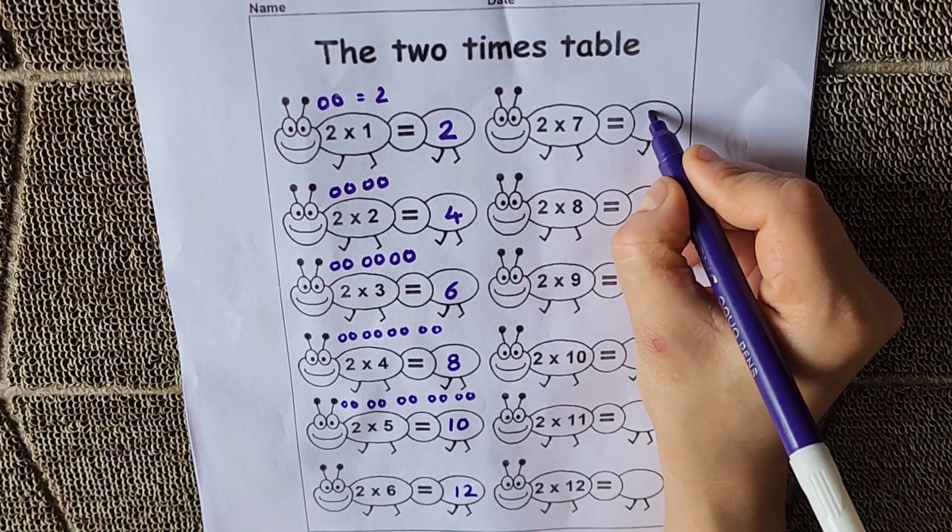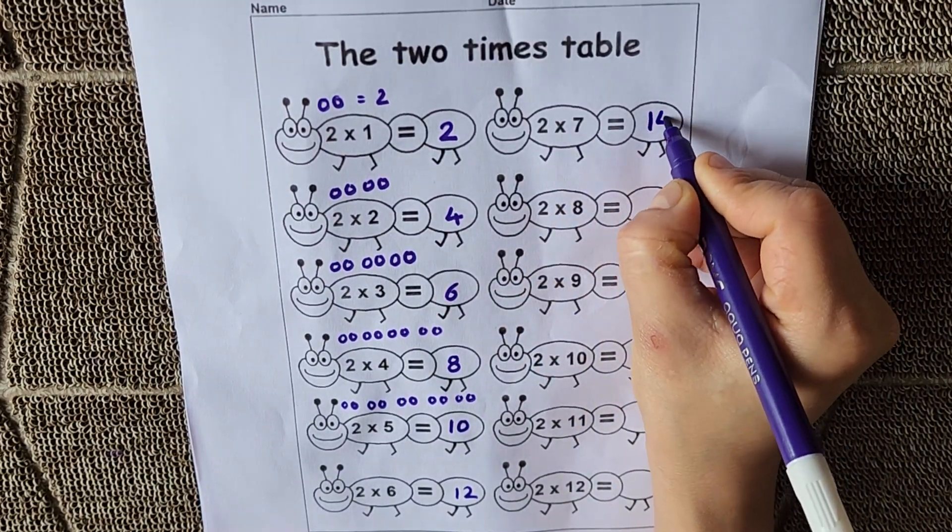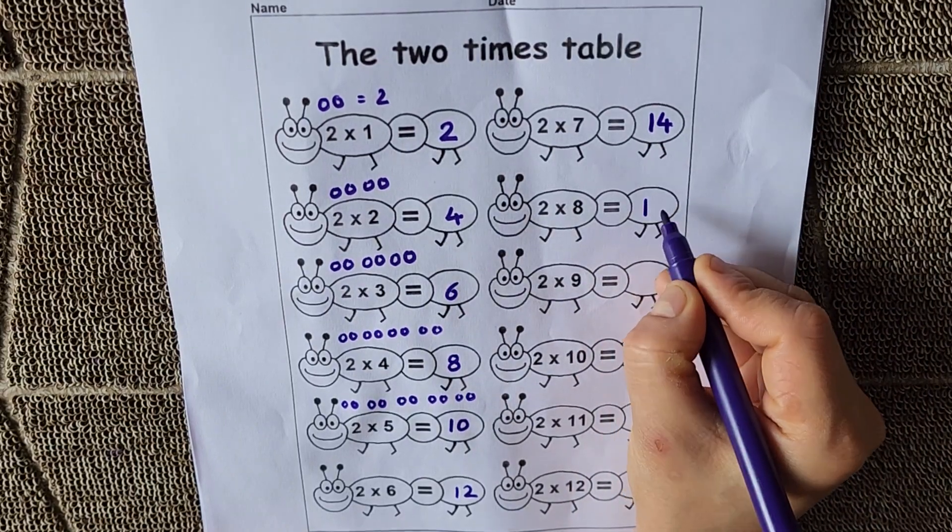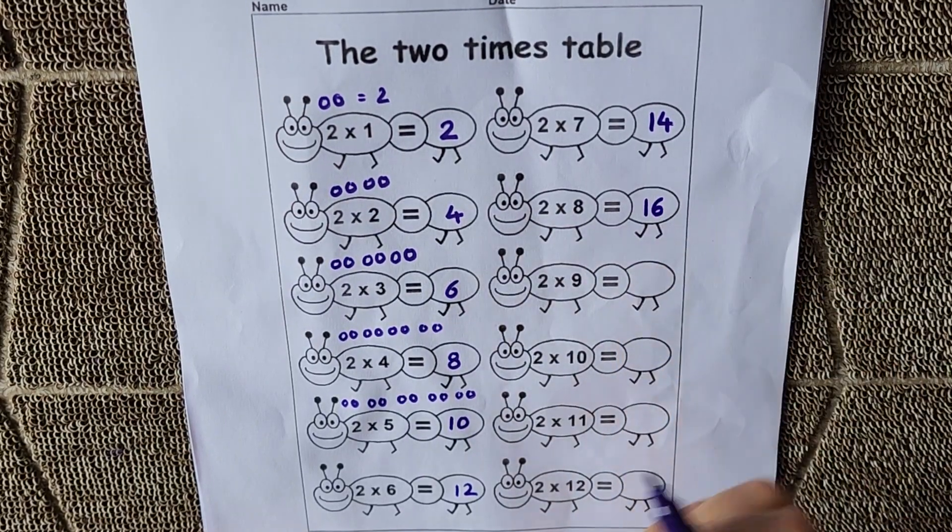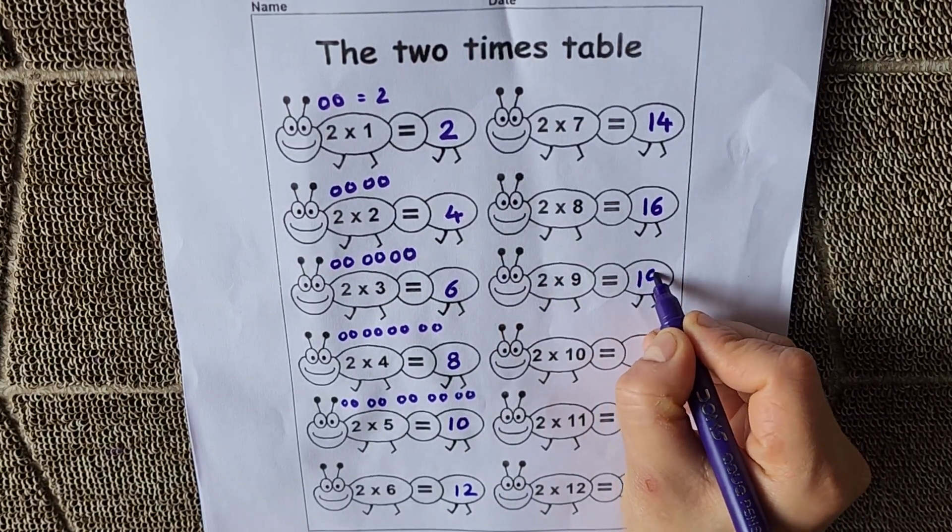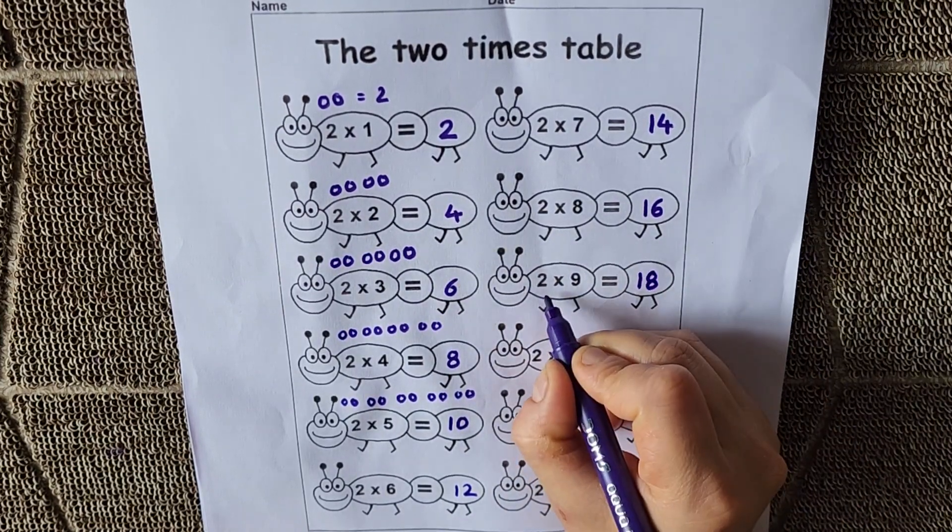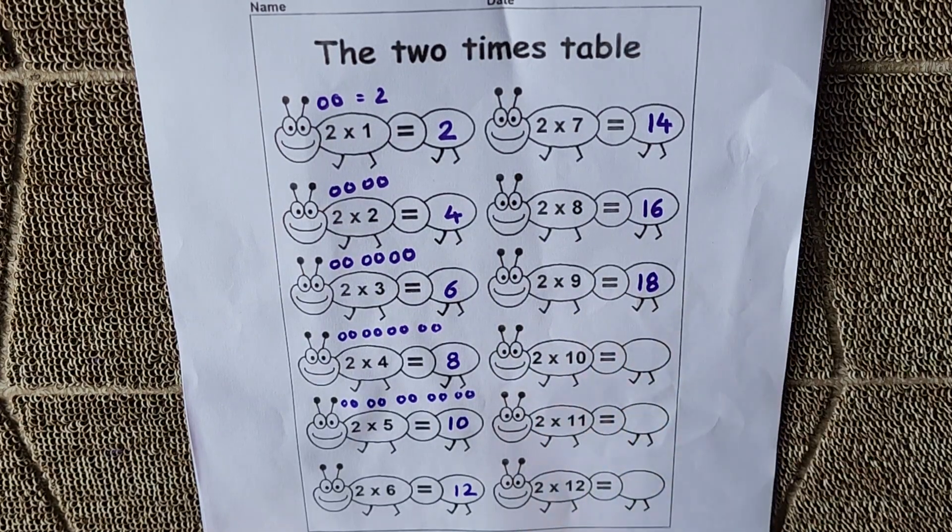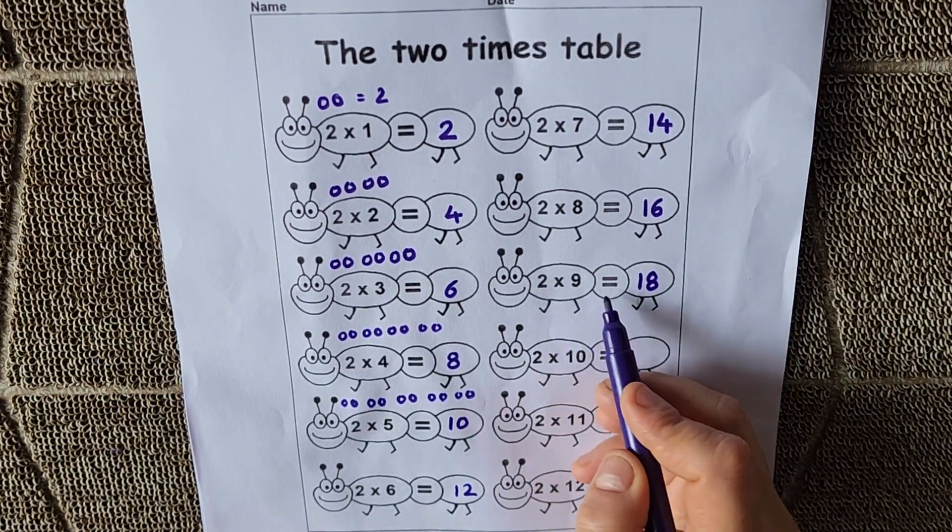2 7s are 14. 2 8s are 16. 2 9s are 18. Means 2 balls but 9 times. Right? So total number of balls are 18. 2 9s are 18.